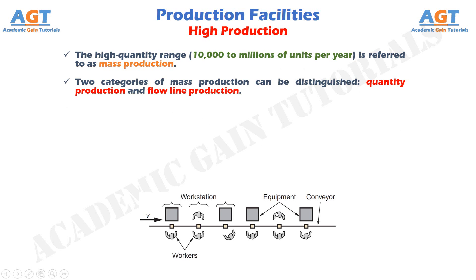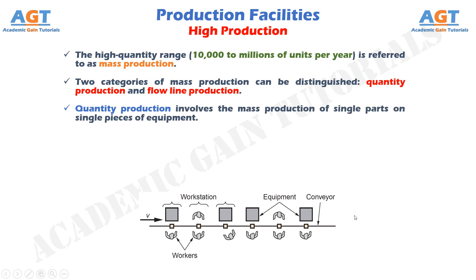Quantity production involves the mass production of single parts on single pieces of equipment. It typically involves standard machines — for example, stamping presses — equipped with special tooling such as dies and material handling devices, in effect dedicating the equipment to the production of one part type. Typical layouts used in quantity production are the process layout and cellular layout.